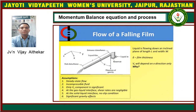This diagram shows the flow of a falling film — liquid flowing down an inclined plane of length L and width W. The film thickness delta depends on the X direction. Assumptions: steady-state flow, incompressible flow, only the V-z component is significant, and there is a significant gravity effect.